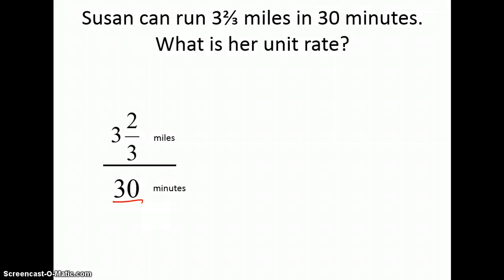So, in order to do that, I want to turn this improper fraction, or this mixed number, into an improper fraction, eleven-thirds. Then I can divide by 30, or multiply by 1 thirtieth.